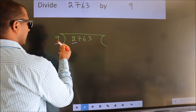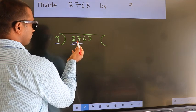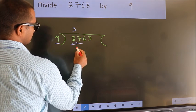2 is smaller than 9, so we should take two numbers: 27. When do we get 27 in the 9 table? 9 threes is 27.